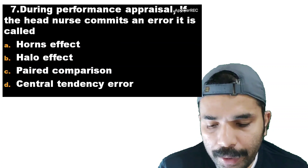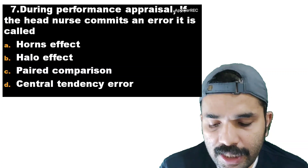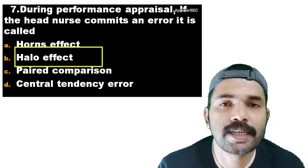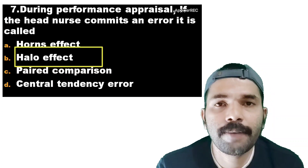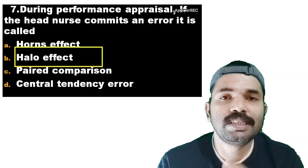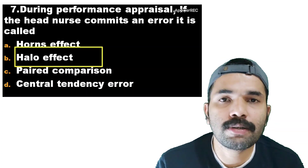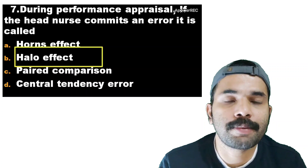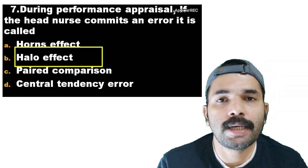During performance appraisal, if the head nurse commits an error, it is called: horns effect, halo effect, paired comparison, or central tendency error. The correct answer is halo effect. In a performance appraisal, if the head nurse has a positive trait, they may view all employees positively — that is the halo effect. If the view is negative, that is the horns effect.